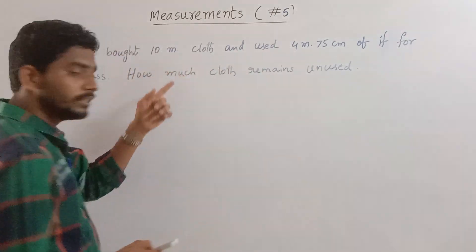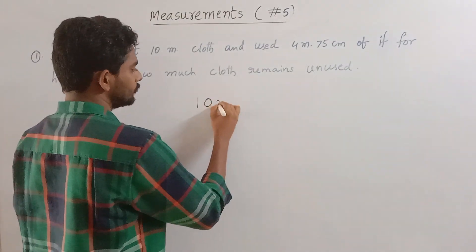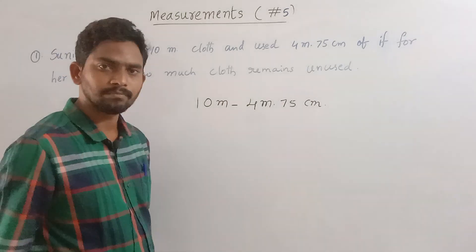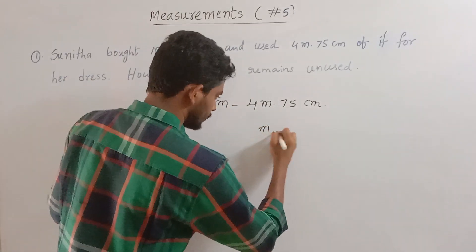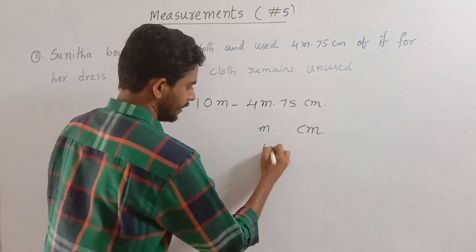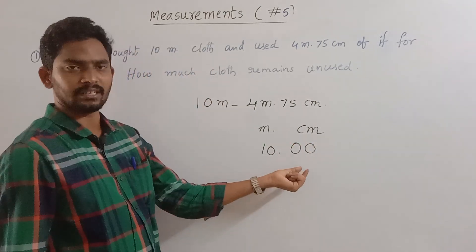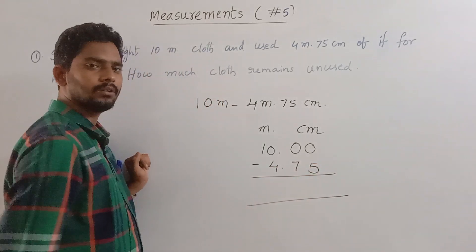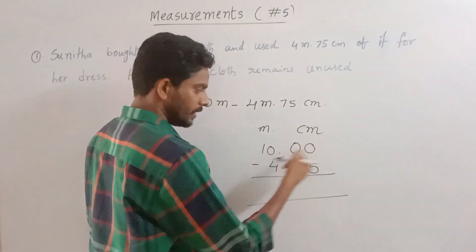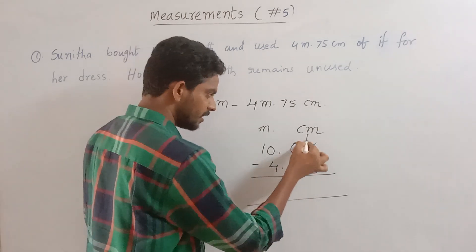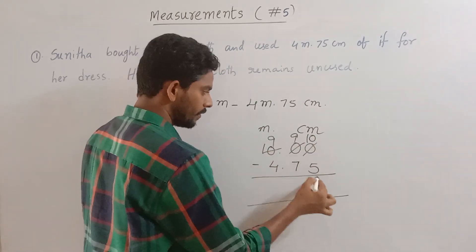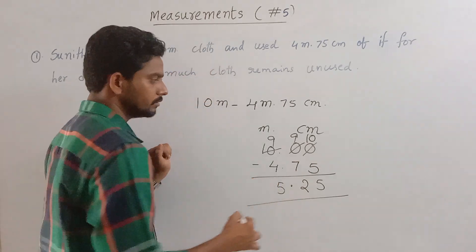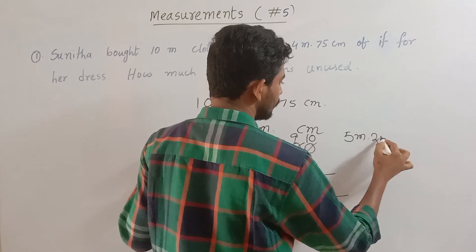If you subtract: 10 meters minus 4 meters and 75 centimeters. Then subtract 4 meters 75 centimeters from 10 meters. The answer is 5 meters and 25 centimeters.